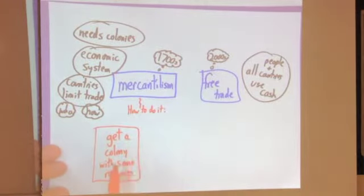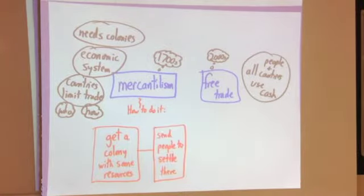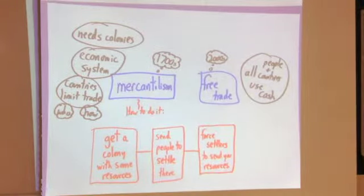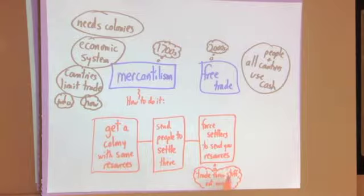If you want to try living life in the 1700s, here's how to do mercantilism. First, you need to get a colony that has some good resources in it. Next, you're going to need to send people who will settle there. They are going to be your customers. Then, you force those settlers to send you some of their resources. When they send you those resources, whatever grows or lives or whatever in that colony, you trade them stuff. You trade them stuff back, not money.